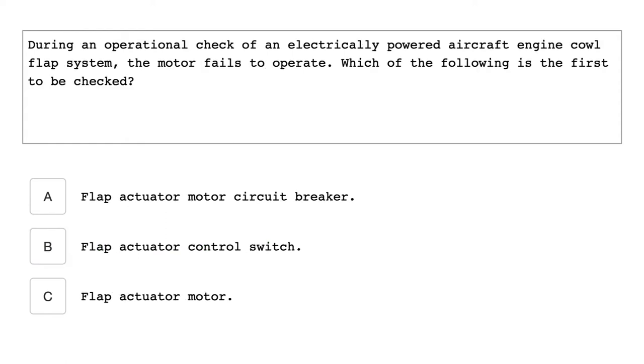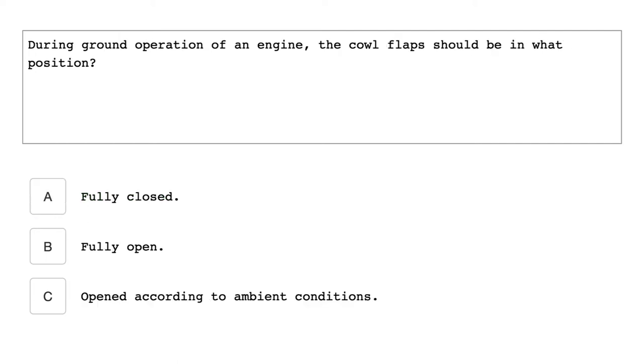During operation of an electrically powered aircraft engine cowl flap system, the motor fails to operate. Which of the following is the first to be checked? Flap actuator motor circuit breaker. During ground operation of an engine, the cowl flaps should be in what position? Fully open.